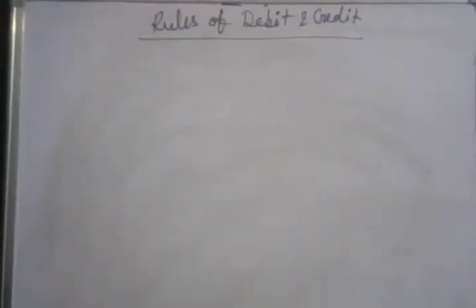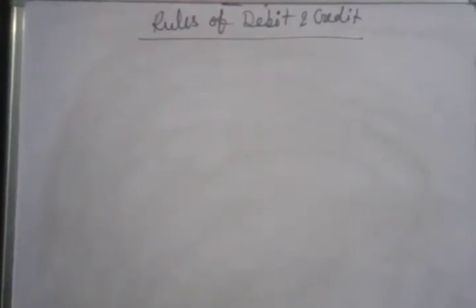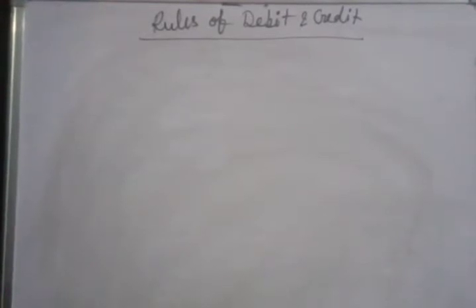Hello everyone, how are you? I hope all of you are fine and ready to study. Dear students, we are taking a step ahead for our accountancy classes. The topic is Rules of Debit and Credit for Class 11. This is a basic class. If you want to study accountancy further, you must understand these rules first.